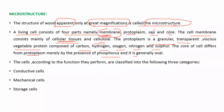The protoplasm is granular, transparent, and viscous vegetable matter. Transparent means you can see through it, like glass — light transfers through it. This protoplasm is also viscous, like a liquid material, and it is a vegetable protein consisting of carbon, hydrogen, oxygen, nitrogen, and sulfur.